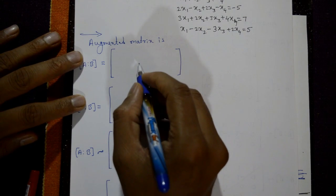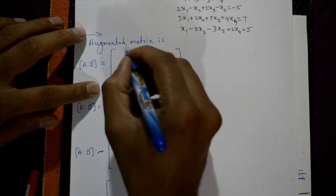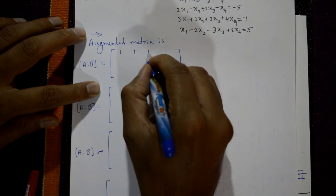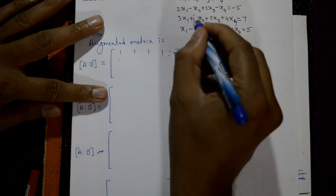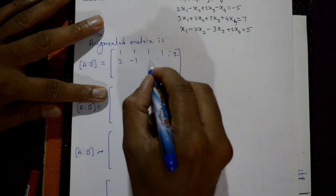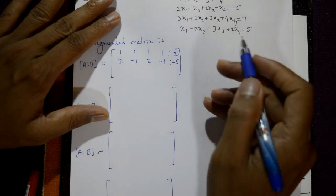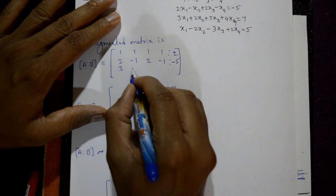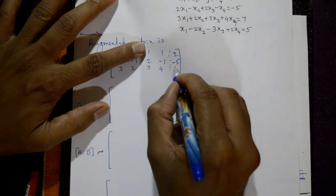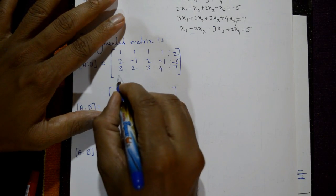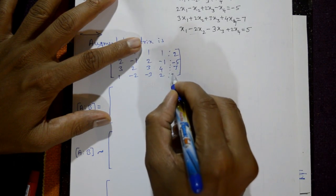Setting up the augmented matrix with coefficients of x1, x2, x3, x4: row 1 is 1 1 1 1 | 2, row 2 is 2 -1 2 -1 | -5, row 3 is 3 2 3 4 | 7, and row 4 is 1 -2 -3 2 | 5.